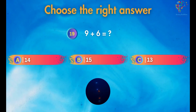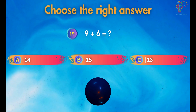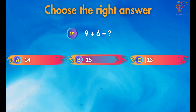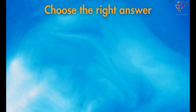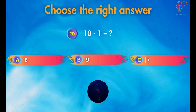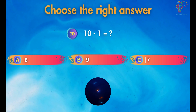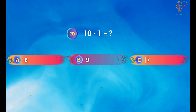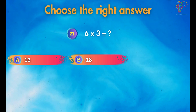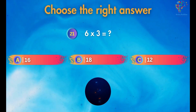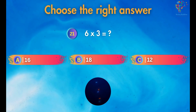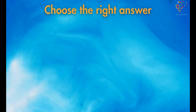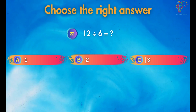9 plus 6 equals 15. 10 minus 1 equals 9. 6 times 3 is equal to 18. 12 divided by 6 equals 2.